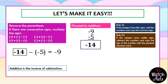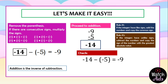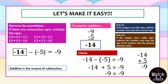We don't stop there — we check if our answer is correct. Negative 14 minus negative 5 is equal to negative 9. We remove the parenthesis, then multiply the two negatives — we get a positive. So we have negative 14 plus 5 equals negative 9. Unlike signs — subtract: 14 minus 5 is 9. Which is greater, 14 or 5? Of course, 14. The sign is negative, so the answer is negative 9. Negative 9 equals negative 9 — our answer is correct.